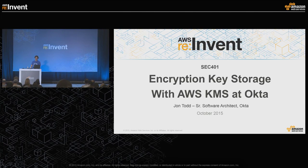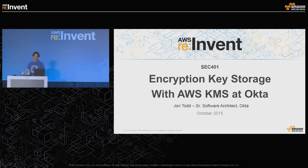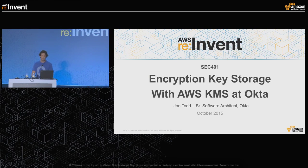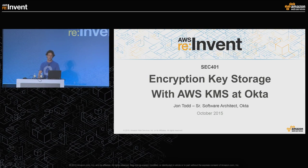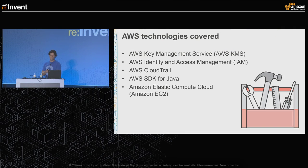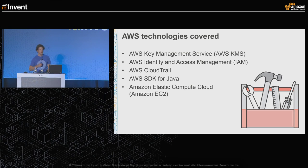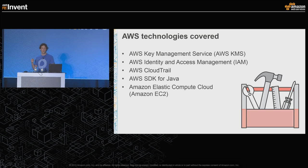Good afternoon. My name is John Todd and I lead the system architecture team at Okta. My team works across the product to improve scalability and security. In this session I'm grateful to have the opportunity to present how we're using KMS at Okta in a multi-region environment. In addition to talking about Amazon's Key Management Service, we're also going to touch on Identity and Access Management, CloudTrail, and how we're doing auditing.